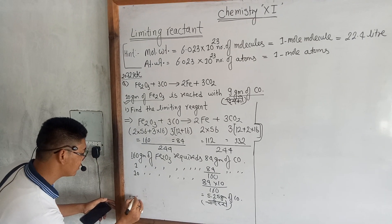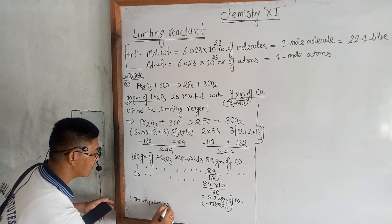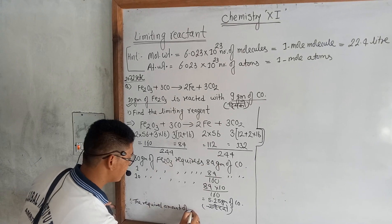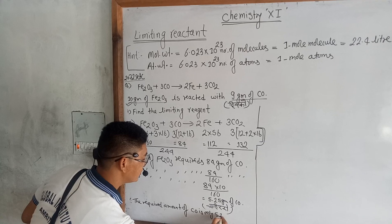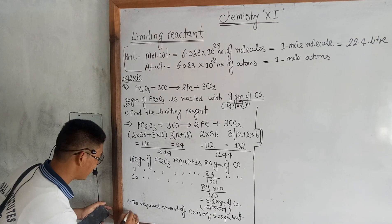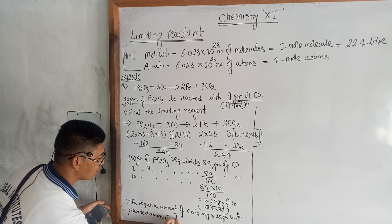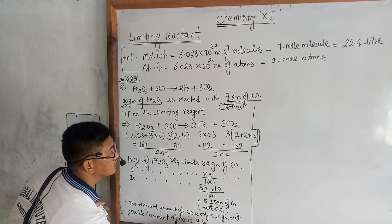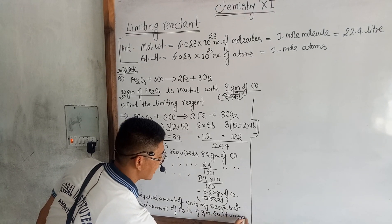The required amount of CO is only 5.25 grams, but the provided amount of CO is 9 grams. So it is an excess reaction.